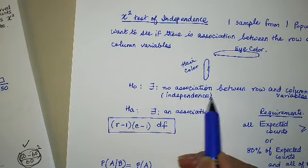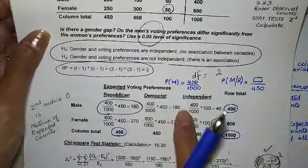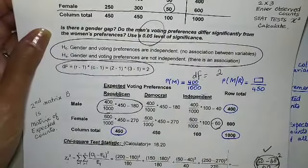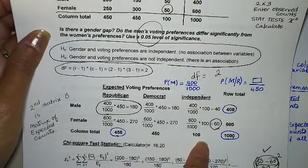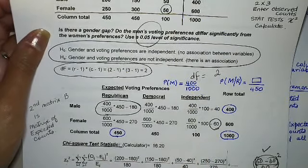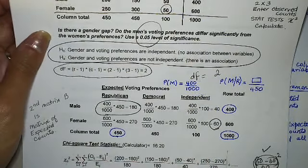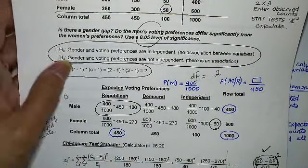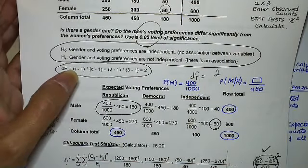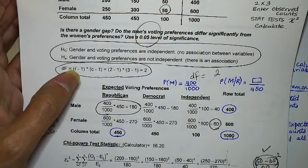I'm setting up the proportions such that this holds because the assumption is under the null hypothesis we have independence, which means that the probability of male in this case is equal to the probability of male given Republican, male given Democrat, and male given Independent. Follow or not?